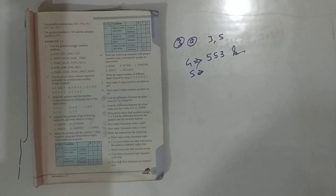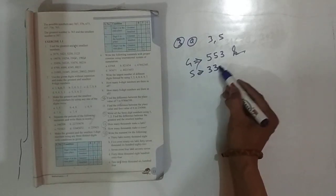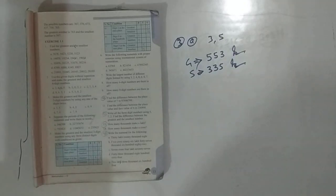And the smallest number, when you write the smallest number, you will have to make this 2 times, right? 3, 3, 5. That is the smallest number. Answer.